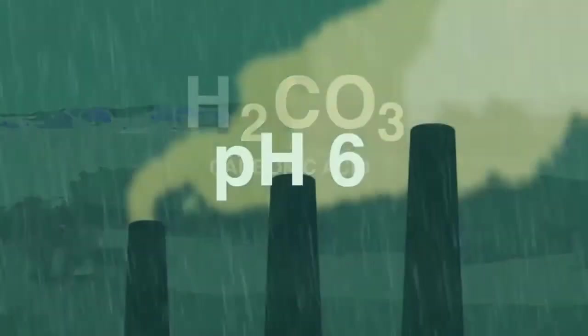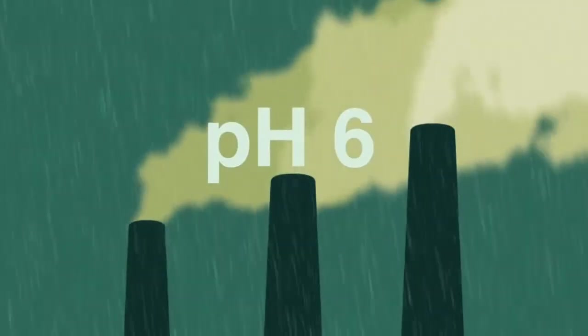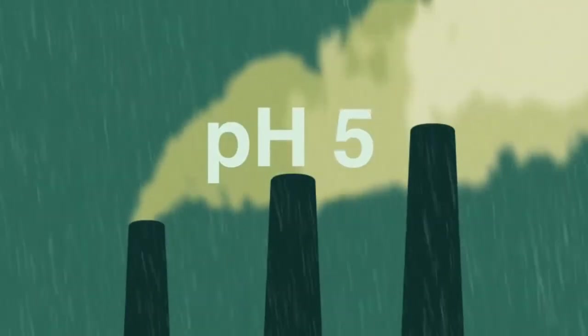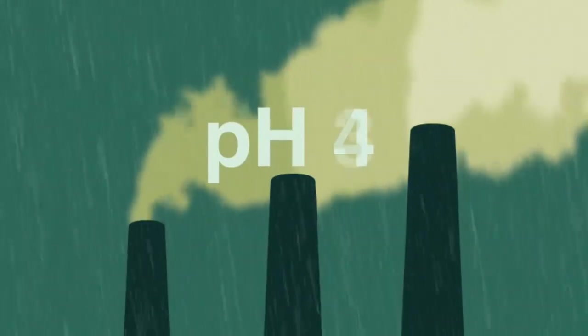It's when we burn fossil fuels that much stronger acids get into our rain to form acid rain with a pH as low as 3.